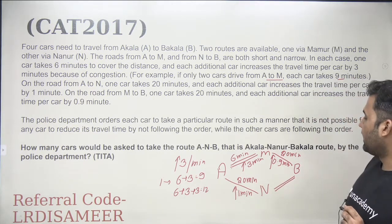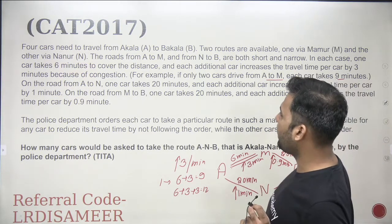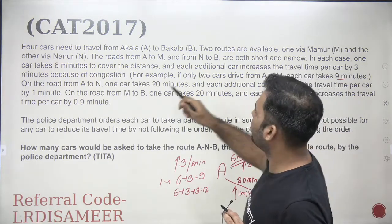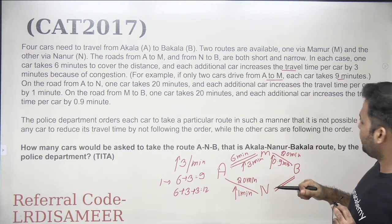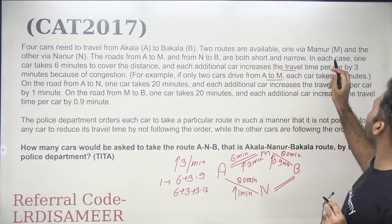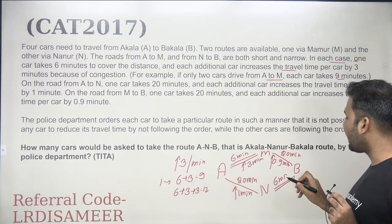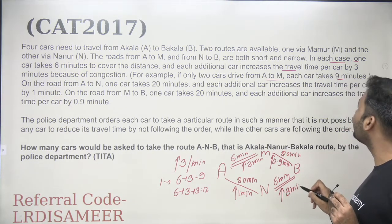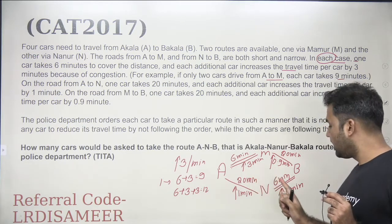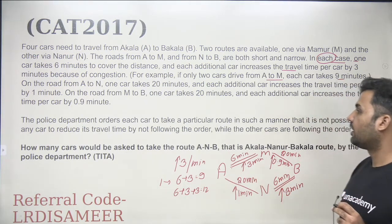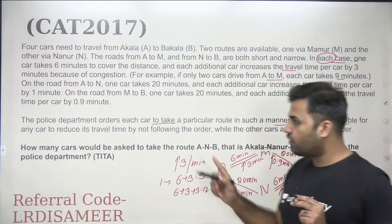In each case — whether going from A to M or N to B — the base time is 6 minutes and every additional car adds 3 minutes. The police department orders each car to take a particular route such that it is not possible for any car to reduce its travel time by not following the order while the other cars are following it.